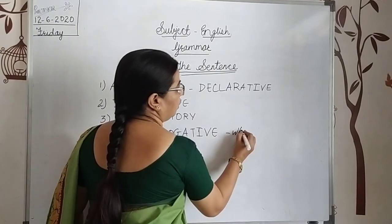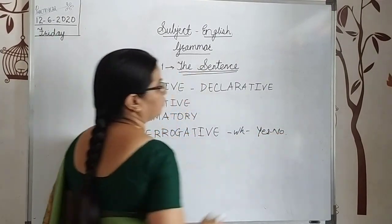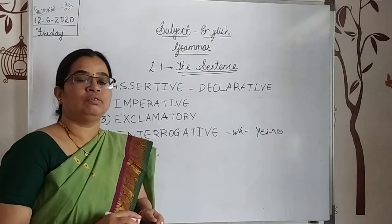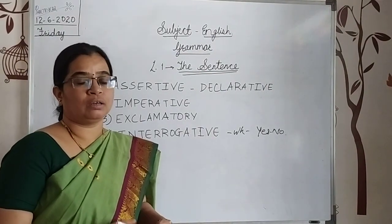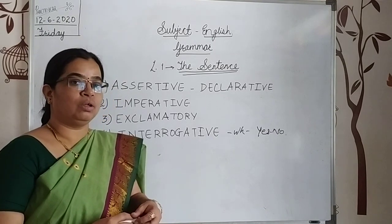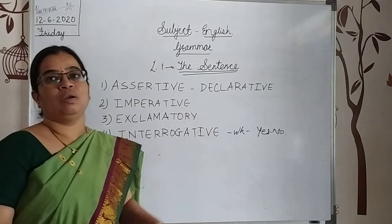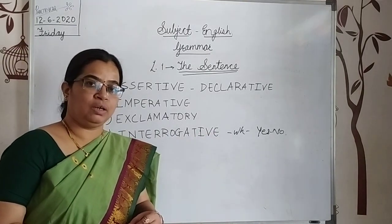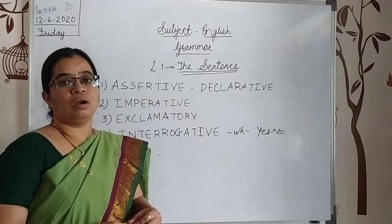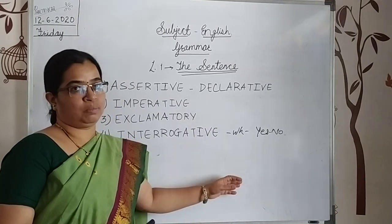WH questions start with words like what, when, where, which, how — these are WH questions. Yes/no questions use helping words such as could, will, are — for example, 'Could you...', 'Will you...', 'Are you...' — these are the yes/no type of questions.